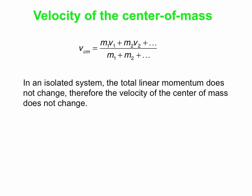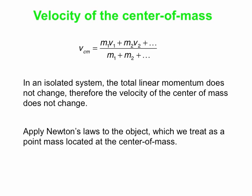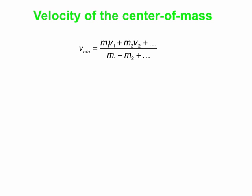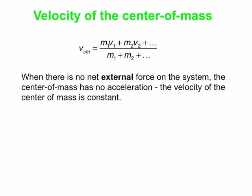In an isolated system — meaning no net external force acts on the system — the linear momentum inside the system can't change, so the velocity of the center of mass can't change. We can apply Newton's laws to the object, and remember, we treat this as a point mass located at the center of mass. That's our simplifying principle. So with no net external force, there's no acceleration, so the velocity of the center of mass must be constant.